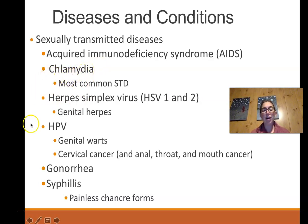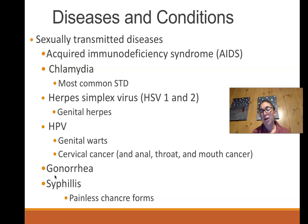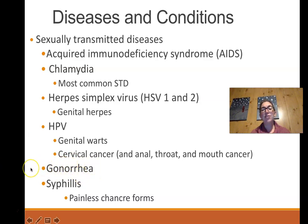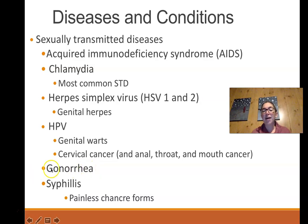Gonorrhea is another very common STI, similar to chlamydia, with symptoms including pain or stinging during urination and pelvic pain — though it can also be asymptomatic. Gonorrhea literally means flow of seed; it is often referred to as a genital discharge disease because it causes increased discharge. That rhea suffix indicates the extra flow.